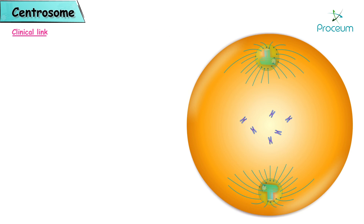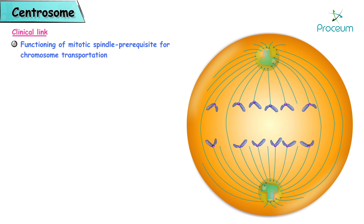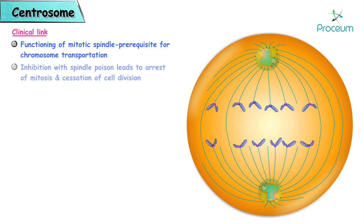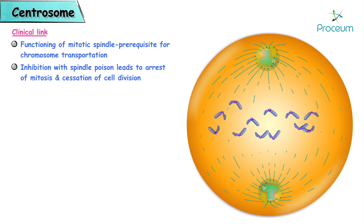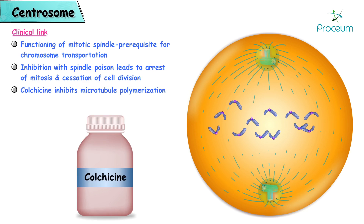Clinical link. Proper functioning of the mitotic spindle is a prerequisite for chromosome transportation. Inhibition with spindle poison leads to arrest of mitosis and cessation of cell division. Spindle poisons include colchicine, which inhibits microtubule polymerization, as well as vinca alkaloids and taxanes.